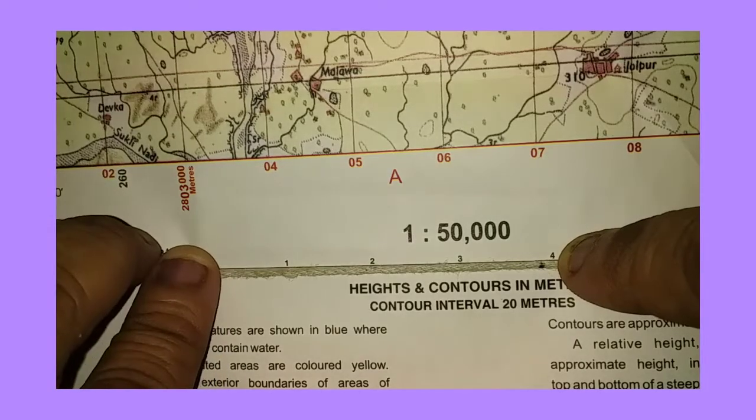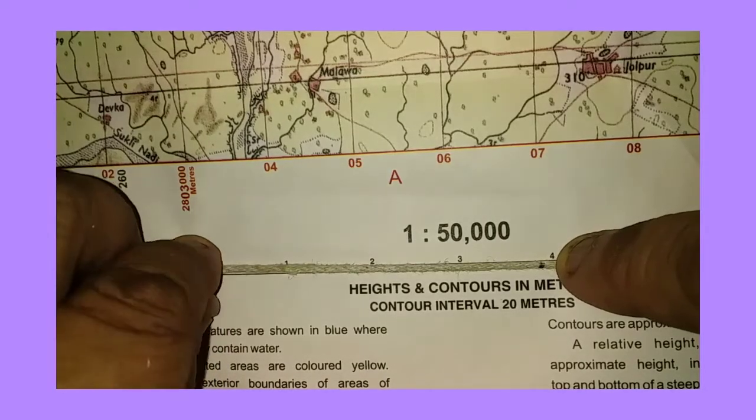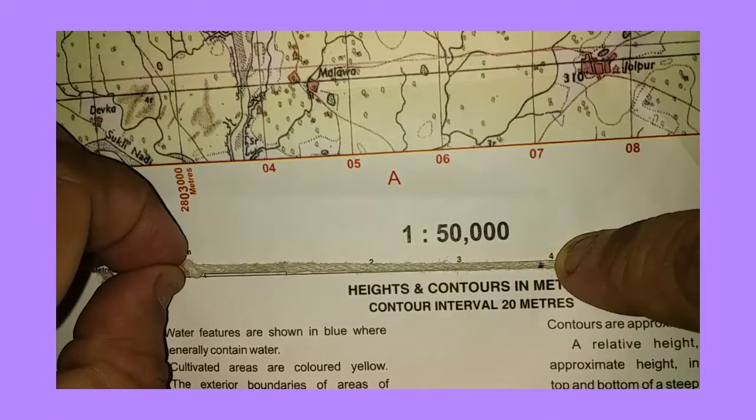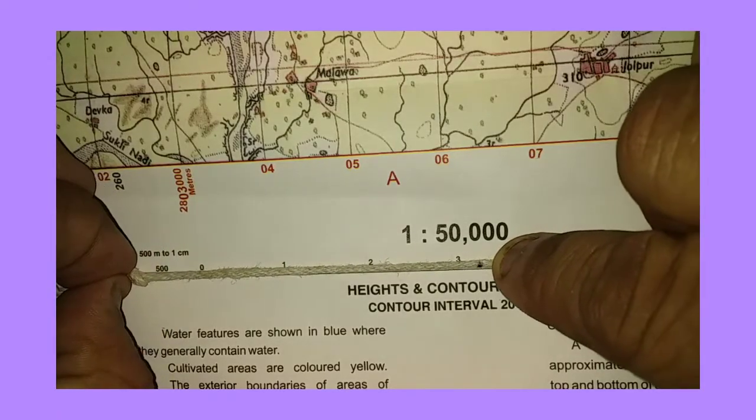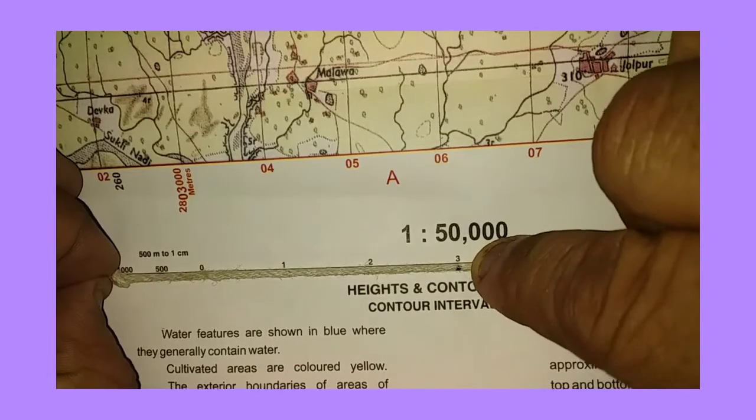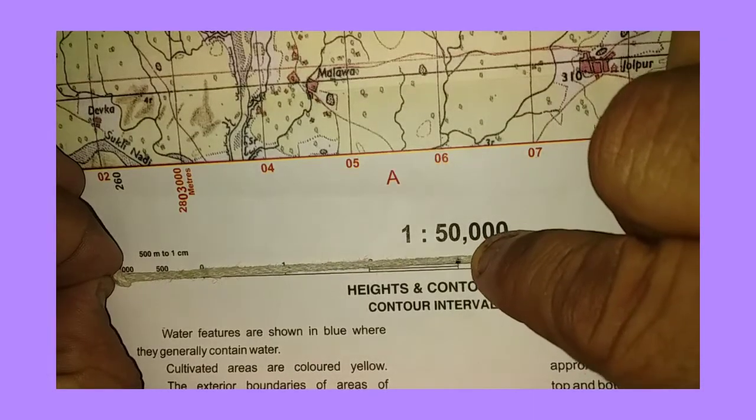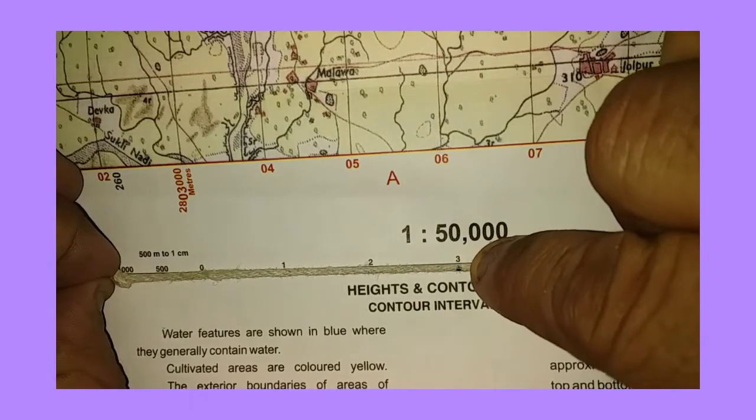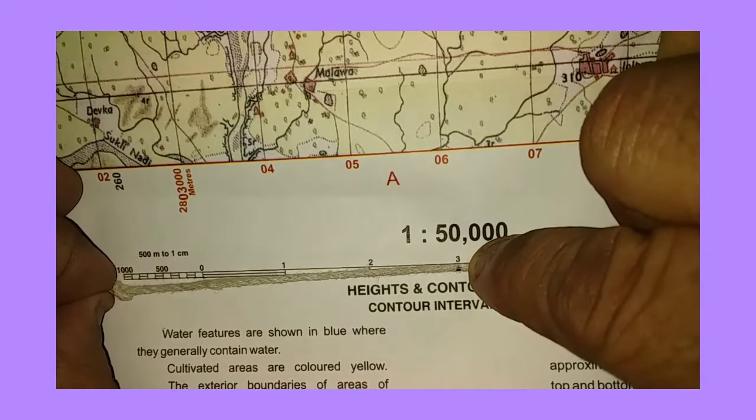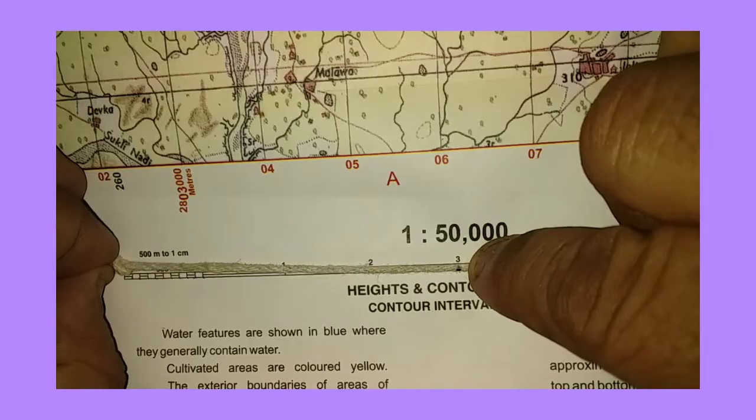So 3 kilometers plus something. Then I will shift the string towards the left so that this point coincides with the 3 mark here, and we will get the subdivisions, that is meters.